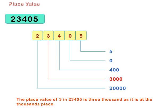The place value of 3 in 23,405 is 3,000 as it is at the thousands place. The place value of 2 in 23,405 is 20,000 as it is at the ten-thousands place.